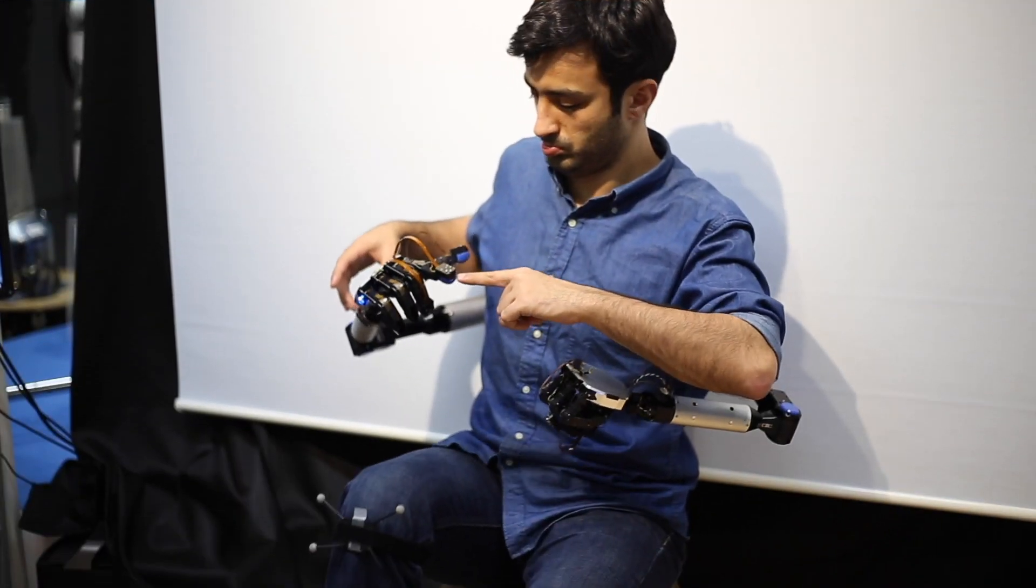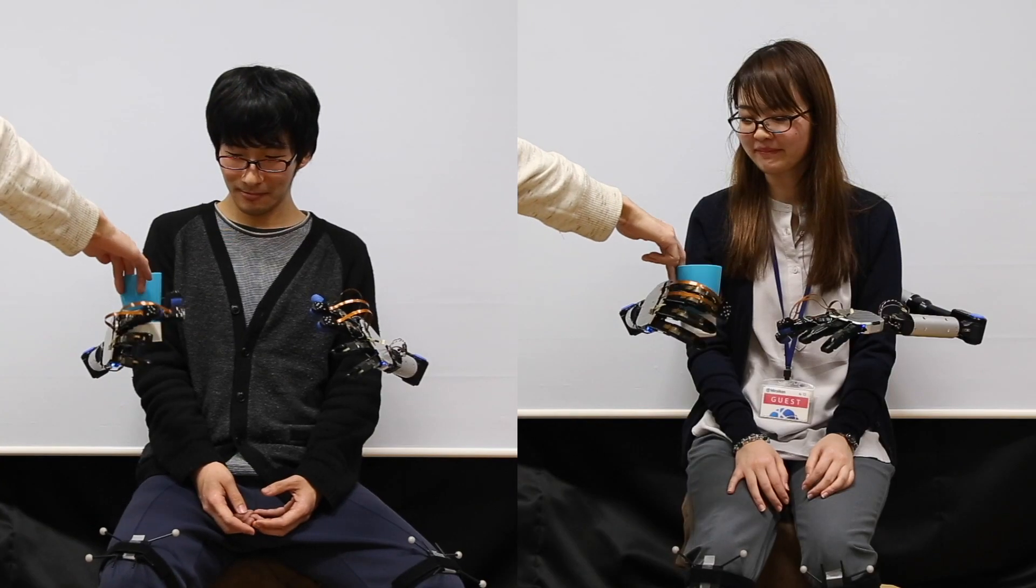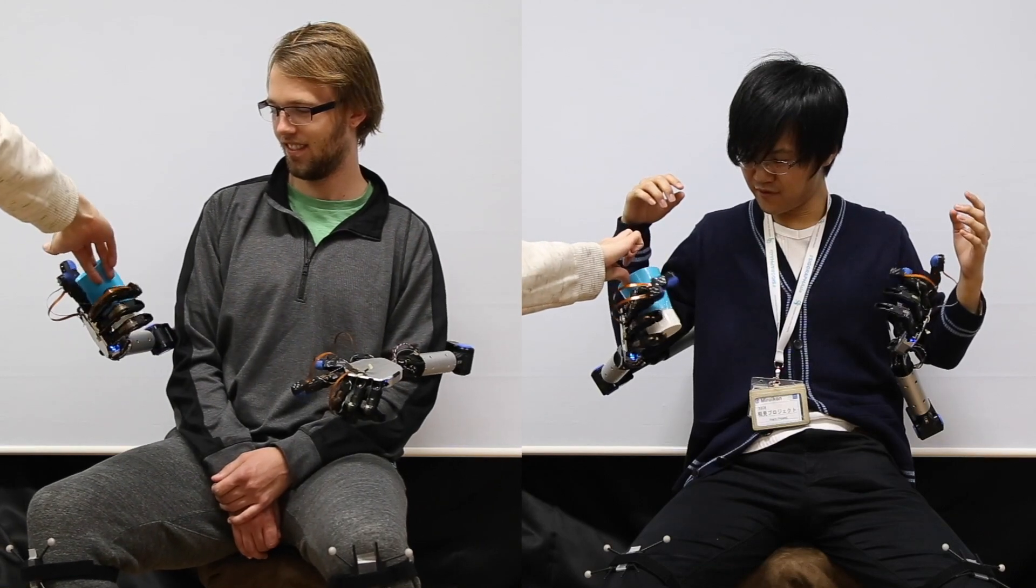MetaLimbs provides easy manipulation of robotic arms by embodying movement. You can reach and grasp an object, touch yourself, and move four arms at the same time.